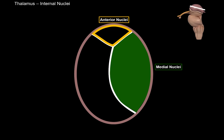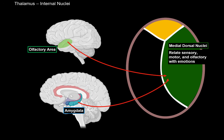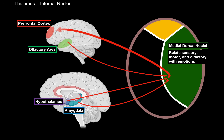Next, the medial group nuclei, also called the medial dorsal nuclei. These nuclei relate sensory input, motor input, and olfactory input with emotions — giving emotional aspects to smell or any sensory or motor input. It receives fibers from the olfactory cortex and from the amygdala, which is involved in fear, aggression, and anxiety, as well as the hypothalamus. The medial dorsal nucleus then sends information to the prefrontal cortex, responsible for attention, personality, and abstract thinking.